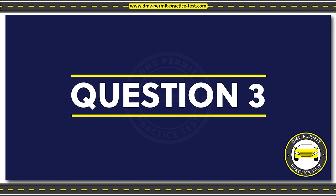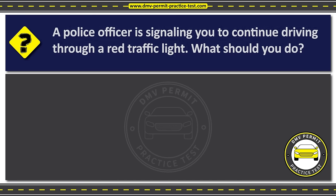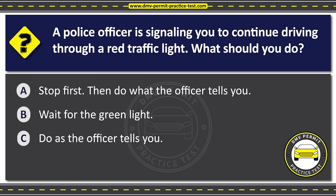Question three. A police officer is signaling you to continue driving through a red traffic light. What should you do? Option A: Stop first, then do what the officer tells you. Option B: Wait for the green light. Option C: Do as the officer tells you. The correct answer is Option C: Do as the officer tells you.